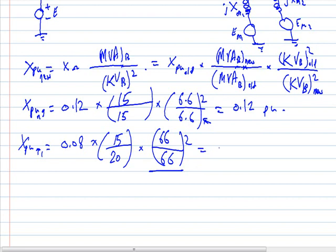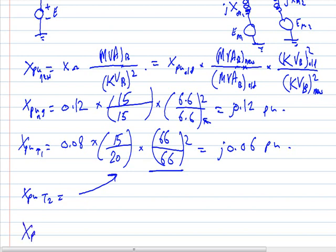The value of this one will be j0.06 per unit. The per-unit value of transformer two is the same as transformer one, which is j0.06 per unit. Now, what about the per-unit value of the transmission line?